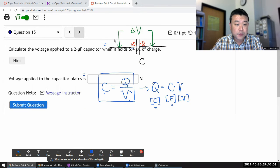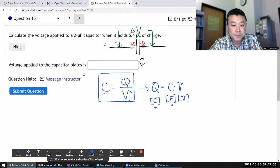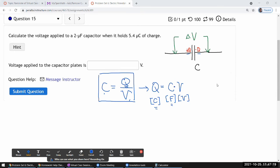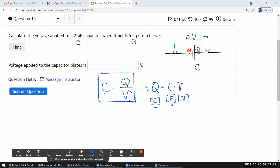So the next question is similar. It says calculate the voltage applied to some amount of capacitance, capacitor when it holds some amount of charge. So here you are dealing with the same expression here, same definition of capacitance. The difference is what is known and what is unknown. So in this question, they are telling you the capacitance and the charge. So you need to solve for the voltage in order to use this definition of capacitance.